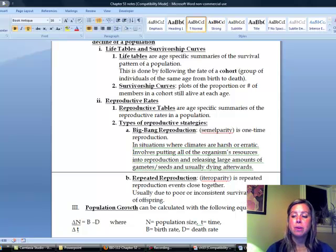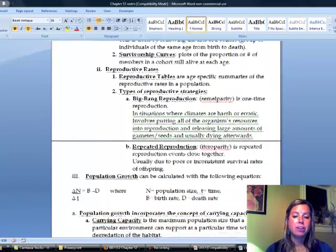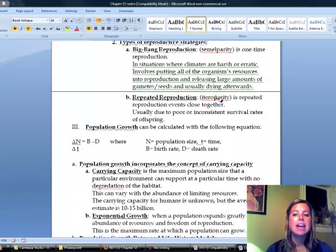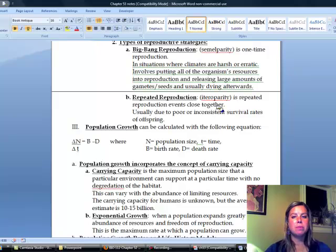Then you've got repeated reproduction, which is also called iteroparity. That's a bunch of repeated reproduction events close together. That's usually because their offspring don't have a good survival rate. Think about cockroaches, mice, that type of thing. Obviously there's an in-between there. I think humans find ourselves in between those two. But those are the extremes that we can talk about.